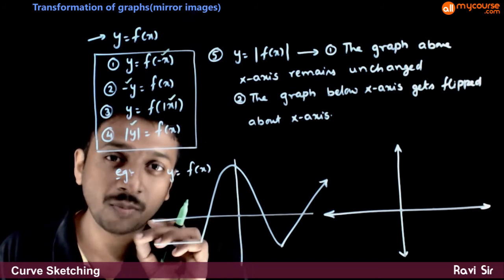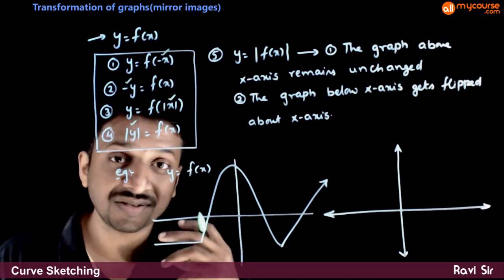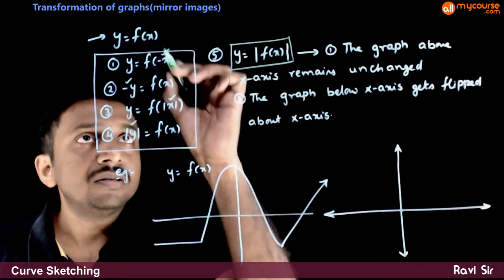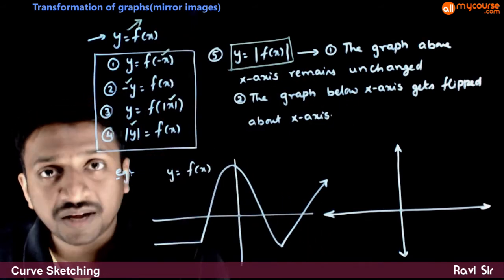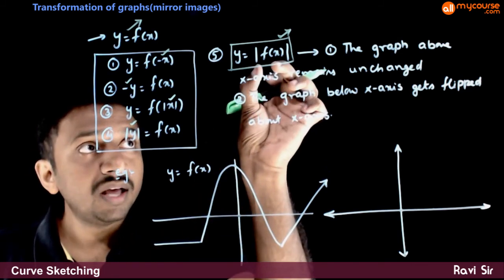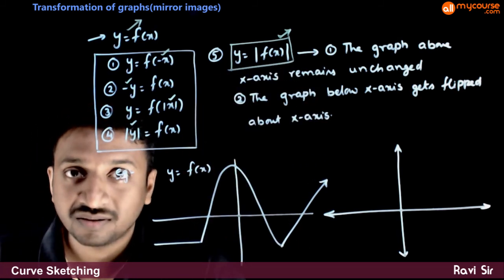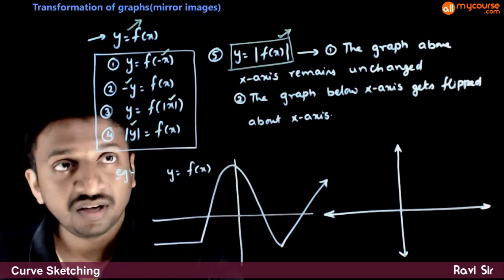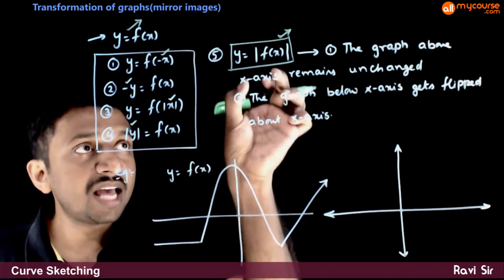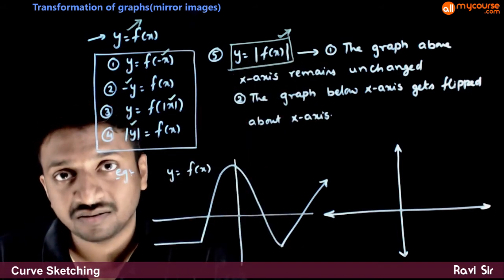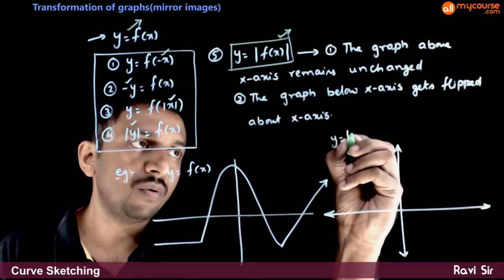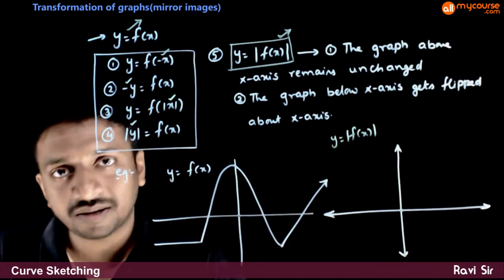Now let us look at one more final transformation corresponding to mirror images. If y = f(x) becomes y = |f(x)|, the whole f(x) is going inside the modulus. This is different from any of the previous transformations — previously we put |y| in place of y or |x| in place of x, but this time we are putting the whole f(x) inside the modulus.